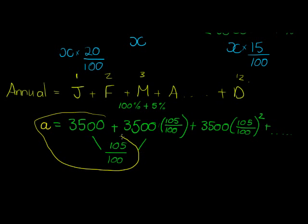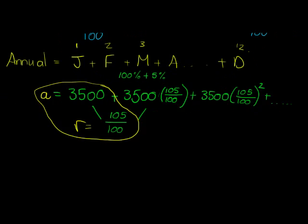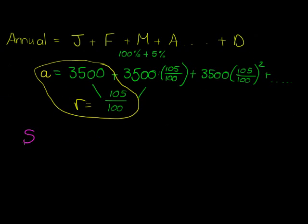Now with that in mind, I can very easily calculate S12. S12, the sum of the first 12 terms, in this case terms represents months, so the sum of the first 12 months can be given by a(1 - r^n) over (1 - r).